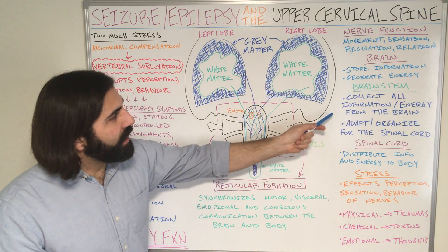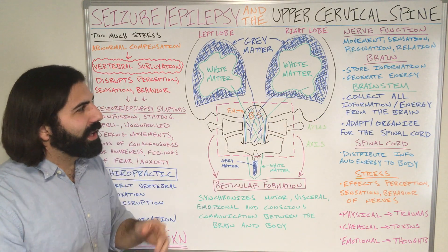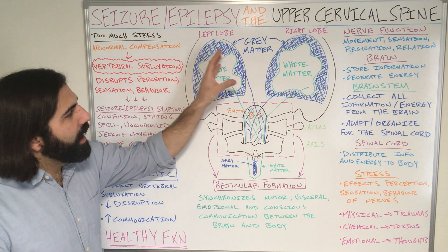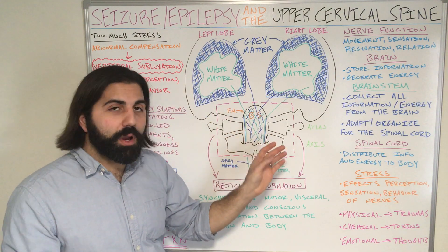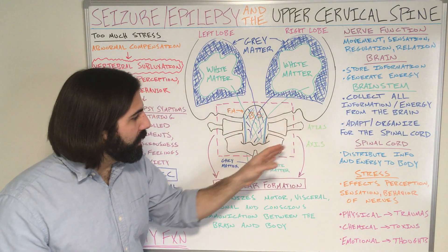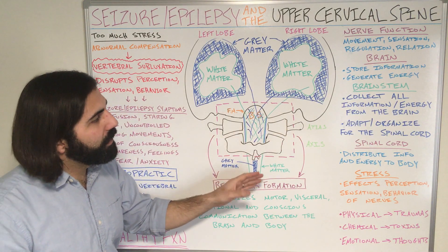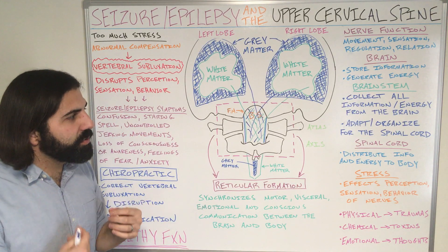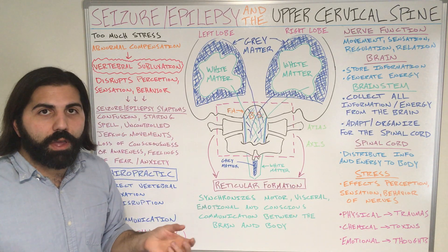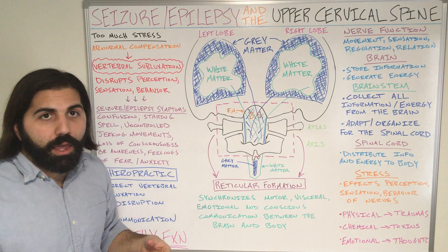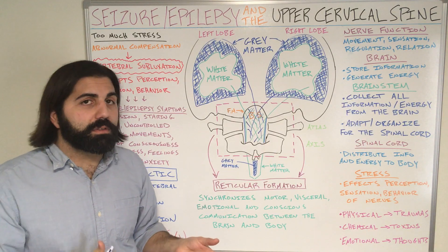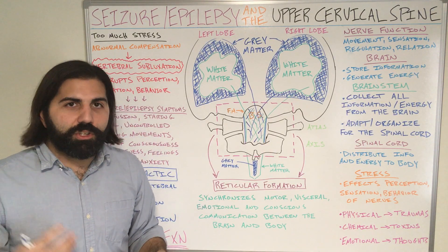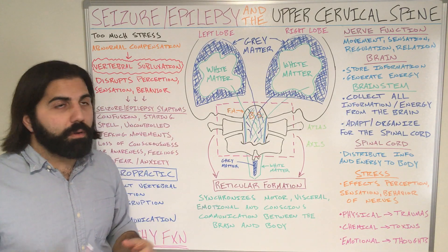Our brainstem's job is to collect all this information and energy from the brain, and then adapt and organize it for the spinal cord below. The job of the spinal cord is to then distribute that information and energy to the body and its end organs — whether it's the heart, the lung, the liver, every tissue, organ, and cell of our body.